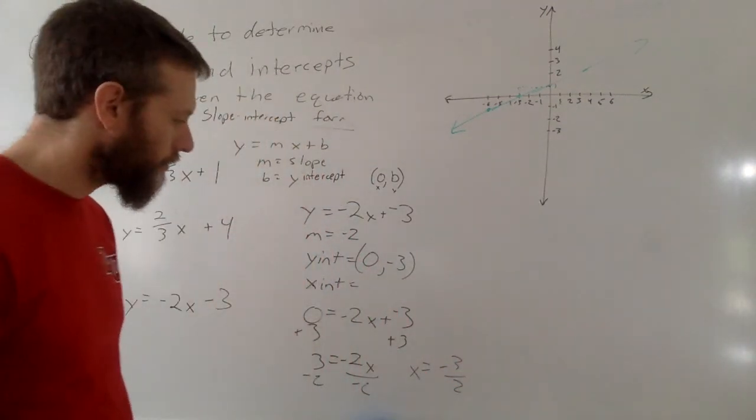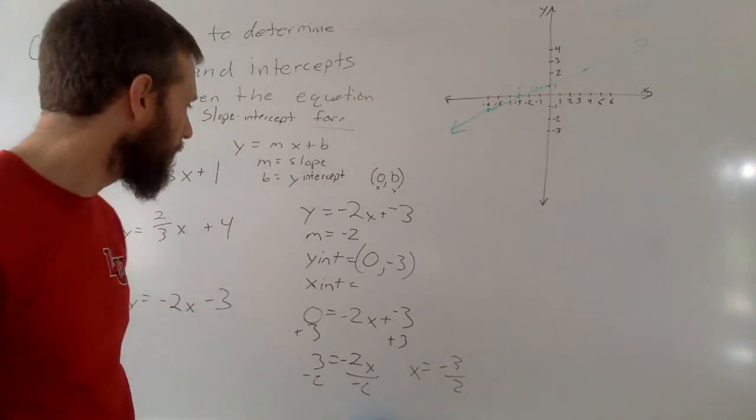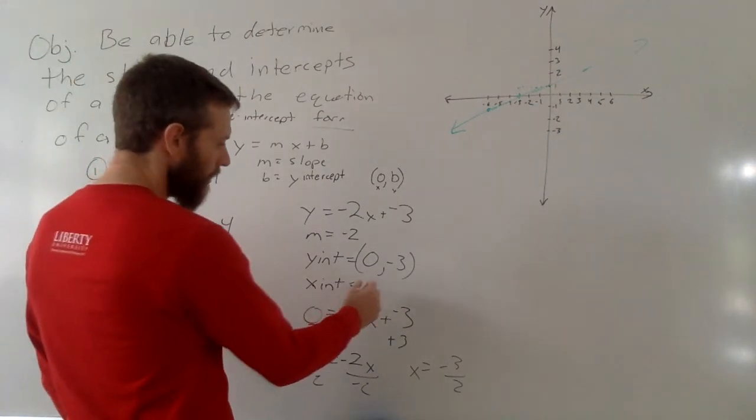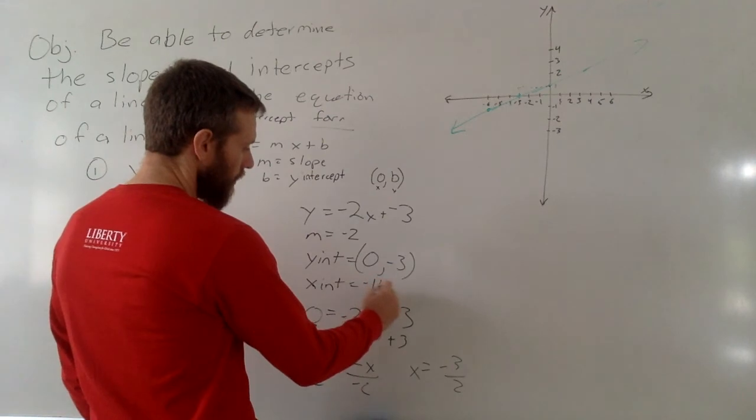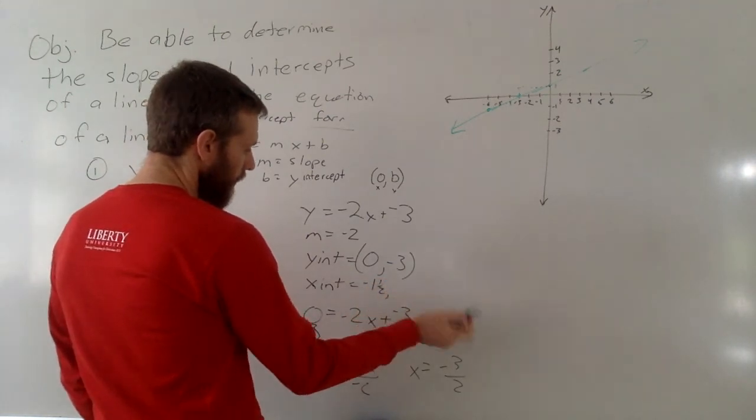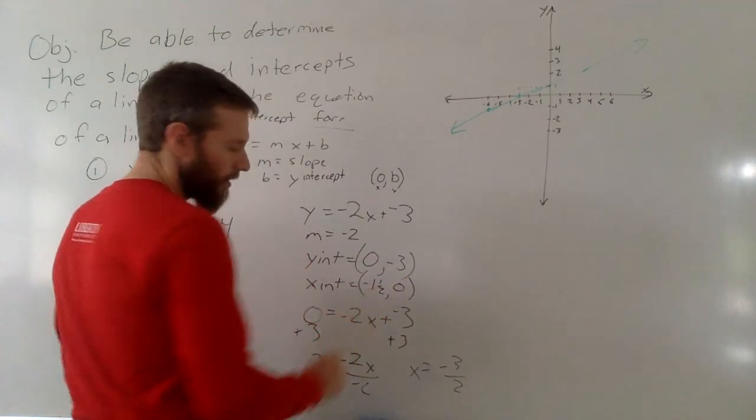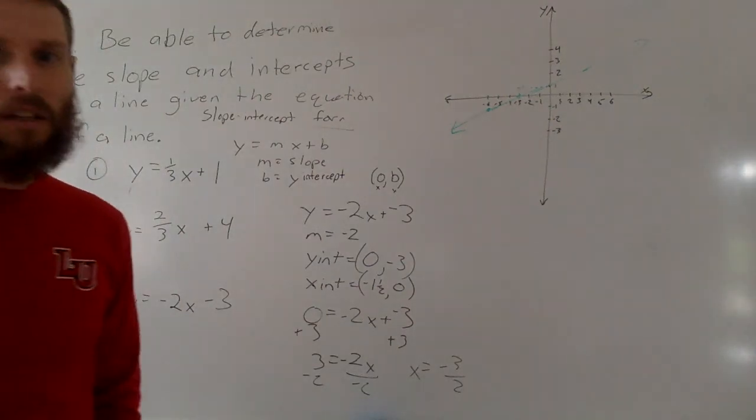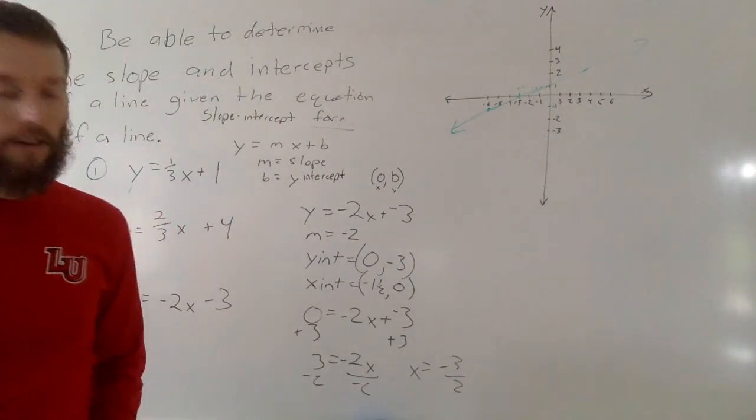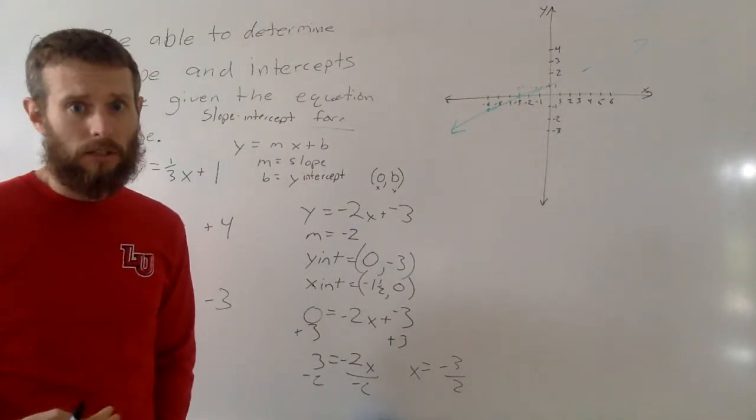Or, you know, of course we know that it's also negative 1 and a half. So the x-intercept is negative 1 and a half, and we can do that, that's fine, comma 0. That's where it will cross on your graph, on your graph this line.